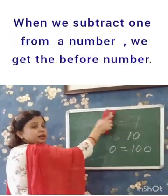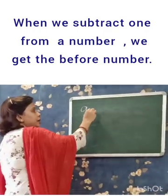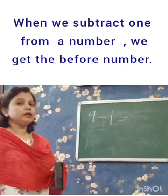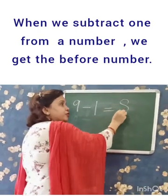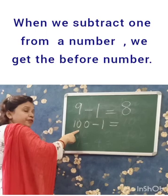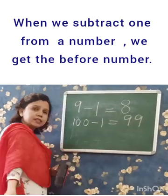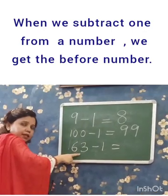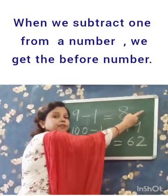When we subtract 1 from a number, we get the before number. Like 9 minus 1 — what is before 9? 8. So 9 minus 1 equals 8. 100 minus 1 — what is before 100? 99. So the answer is 99. 63 minus 1 — what is before 63? 62. So the answer, that means the difference, is 62.